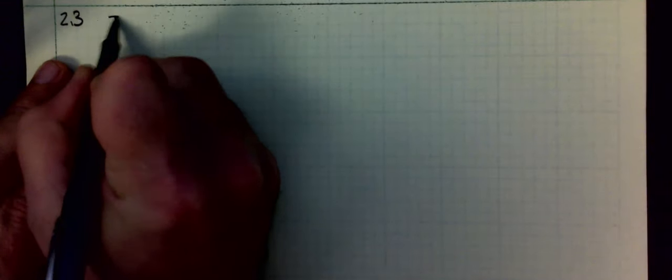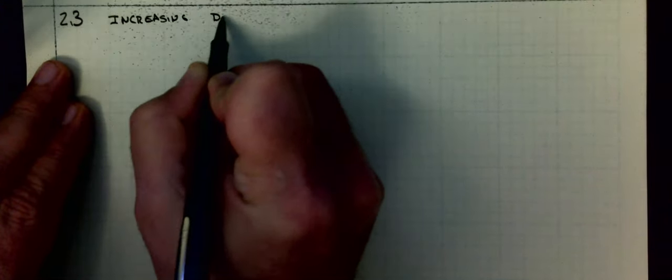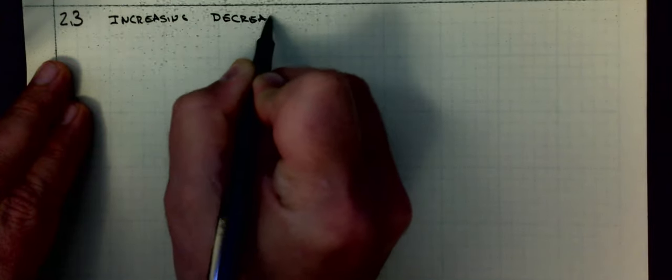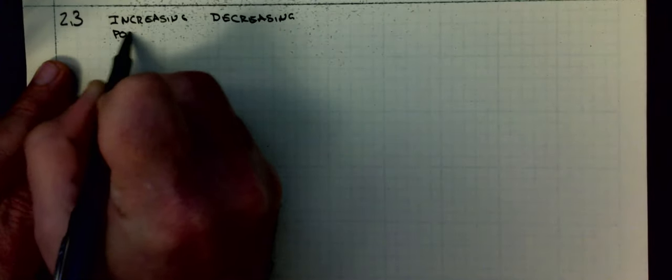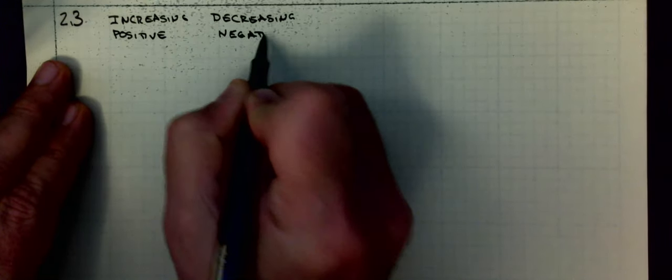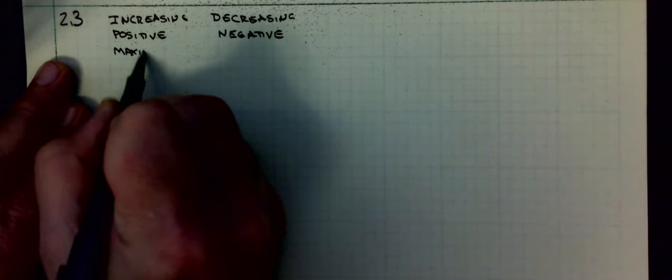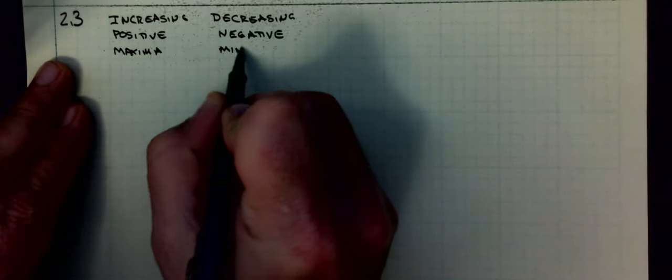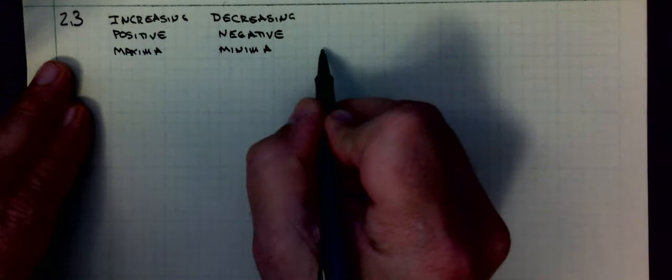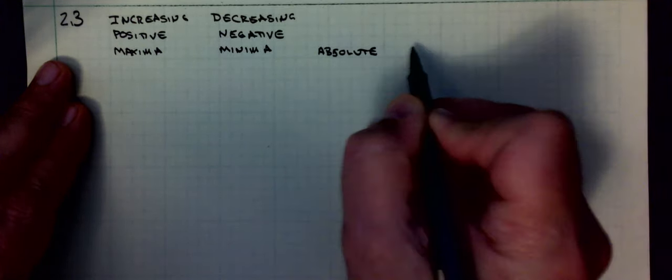The next thing I need to cover from last week is 2.3. Section 2.3 is behavior as a function. You need to be able to know when the function is increasing, decreasing, positive, negative, and you need to be able to identify maxima, minima, and whether these are absolute or relative.